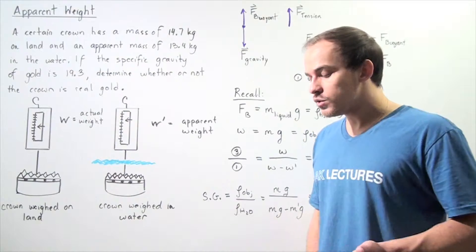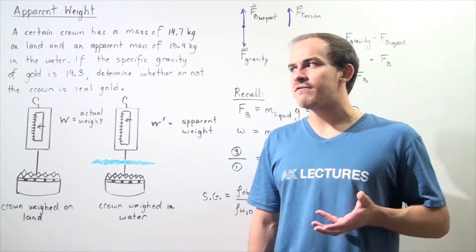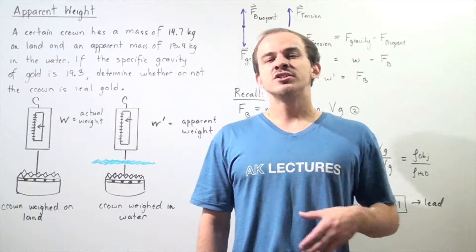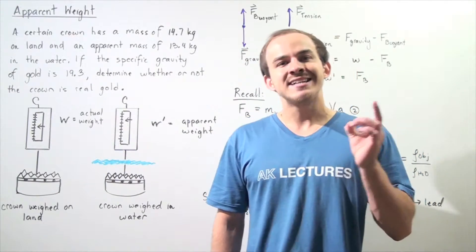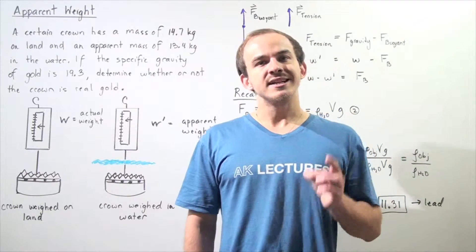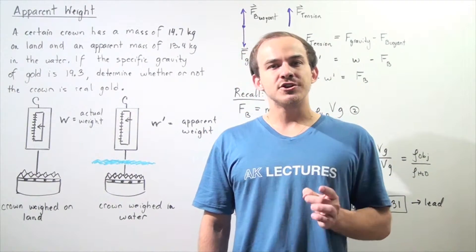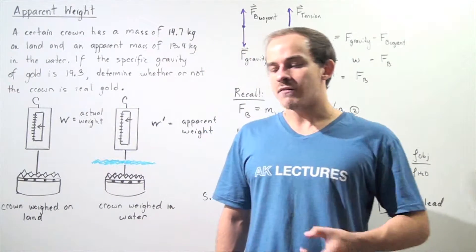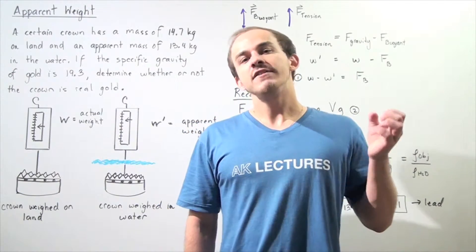Why can we use specific gravity? Well, specific gravity is simply the ratio of the density of the object to the density of water. The density of any object is an intensive property, meaning the density remains constant regardless of any change in shape, size, or form. For example, the density of a small gold nugget is the same exact density as a gold crown.